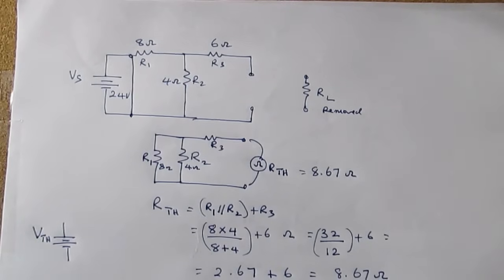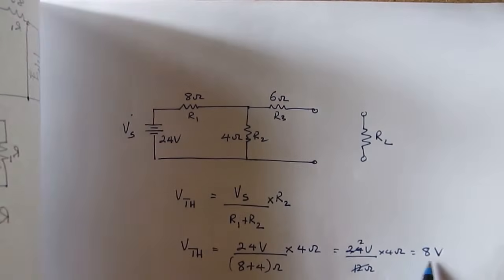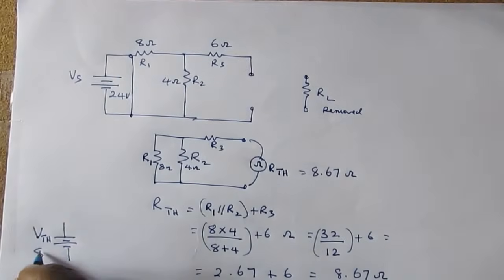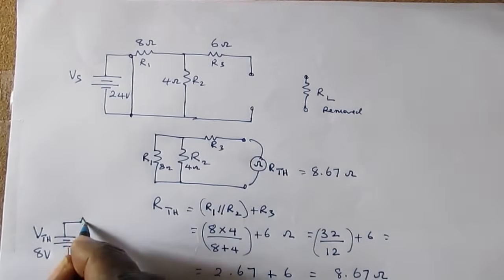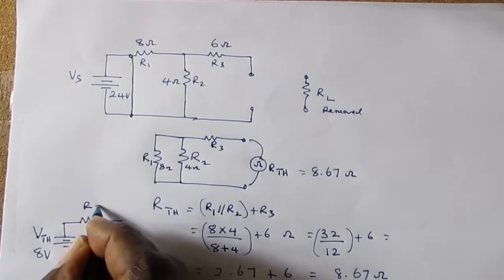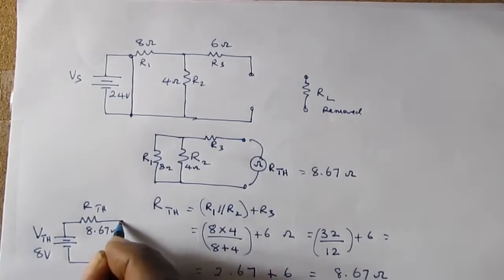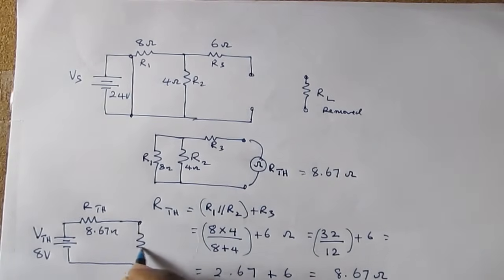Right, so we have 8 volts. R Thevenin we just calculated as 8.67 ohms, and we complete the circuit by drawing on the load resistor which can be of any value.